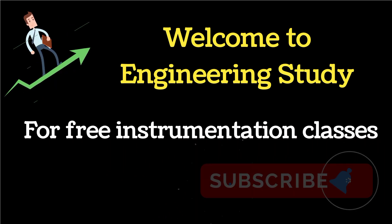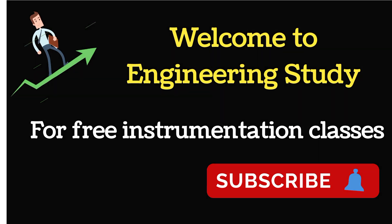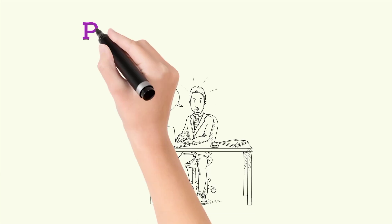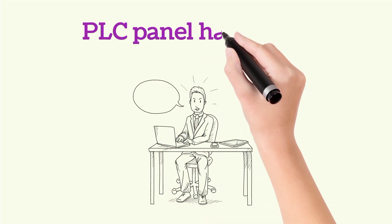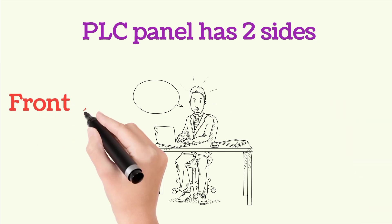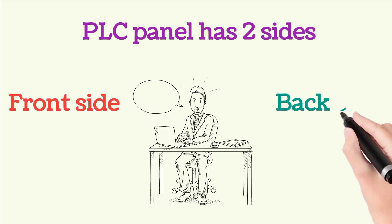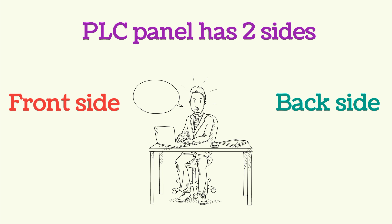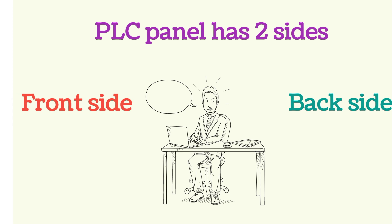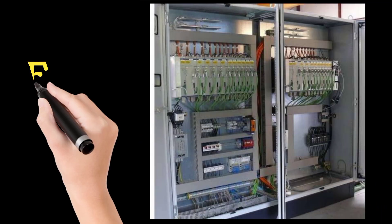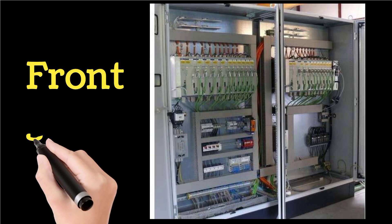PLC panel has two sides: the first one is the front side and the other one is the back side. We will discuss both sides one by one. This is the front side of the PLC panel.